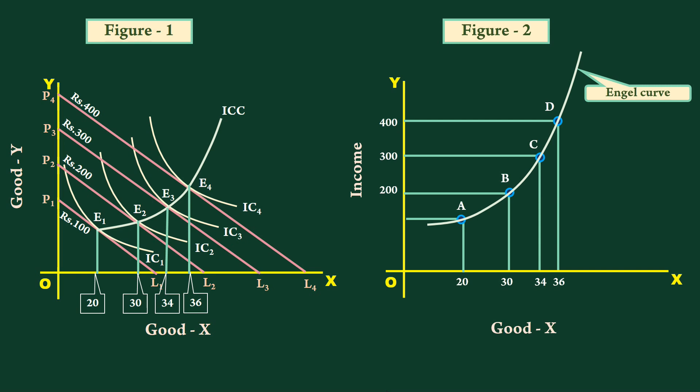The income is increasing at a constant rate. The successive increase in income leads to less and less additional purchase of quantity of good X. It means the proportion of purchase of necessary good, good X, keeps on falling.